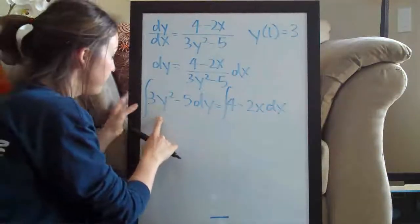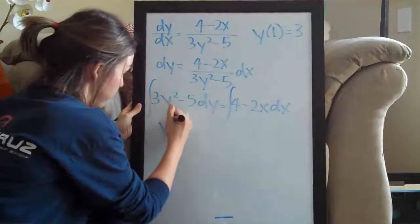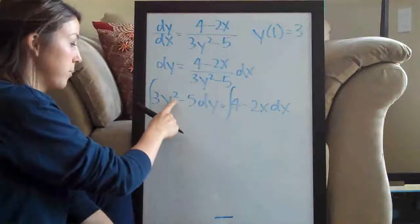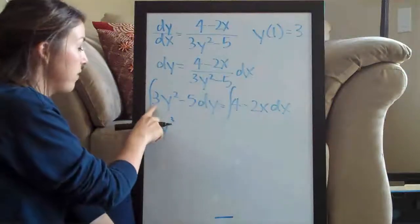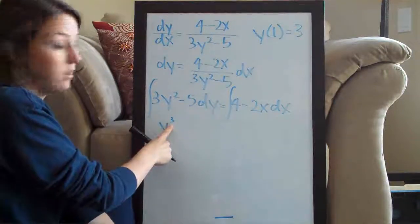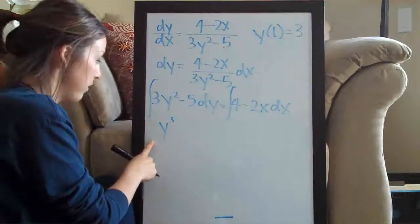So over here, the integral of 3y squared is just y cubed. We add 1 to the exponent so 2 plus 1 is 3, that's our new exponent, and then we divide our coefficient 3 by our new exponent 3 which is just 1. So we don't have to write it there because the 1 is implied.